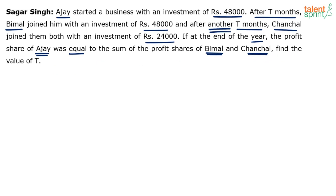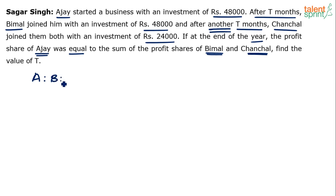How do you calculate profit? Profit is proportional to the investment and the duration of investment — these are the basics from the partnership topic. So let's calculate the profit ratio: Ajay to Bimal to Chanchal. Let's call their profits A, B, and C. The profit of Ajay to Bimal to Chanchal will be in a ratio based on investment multiplied by time.